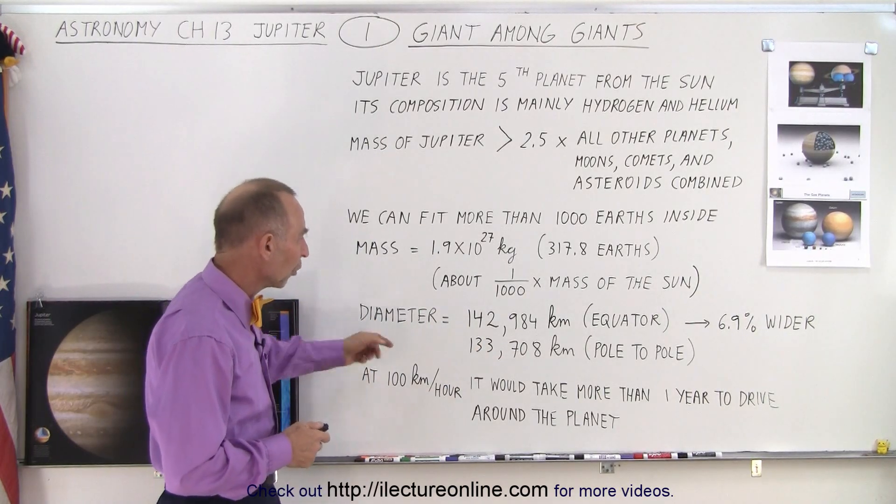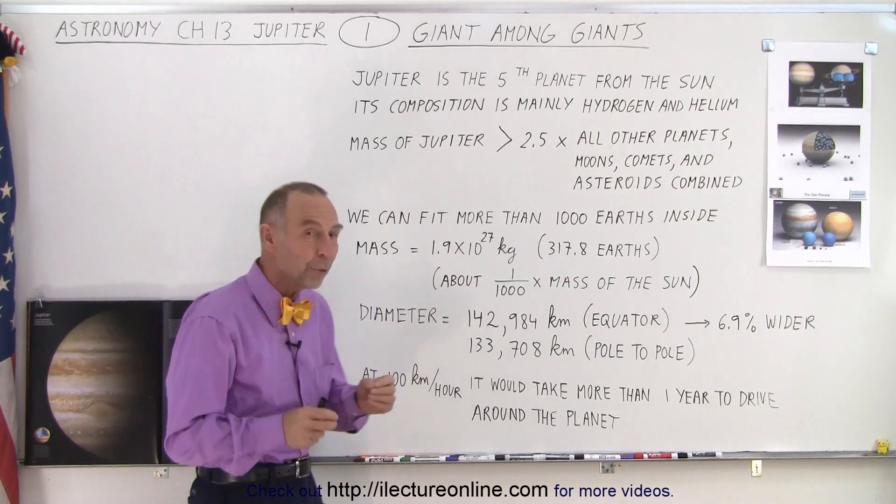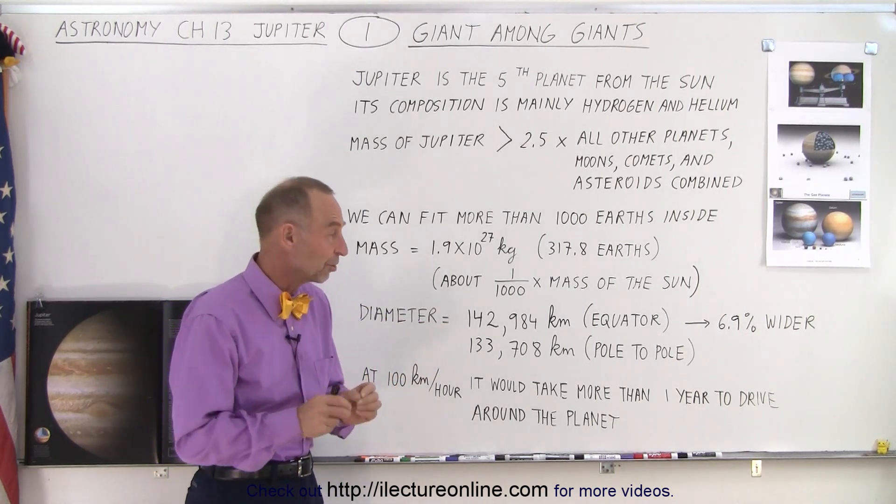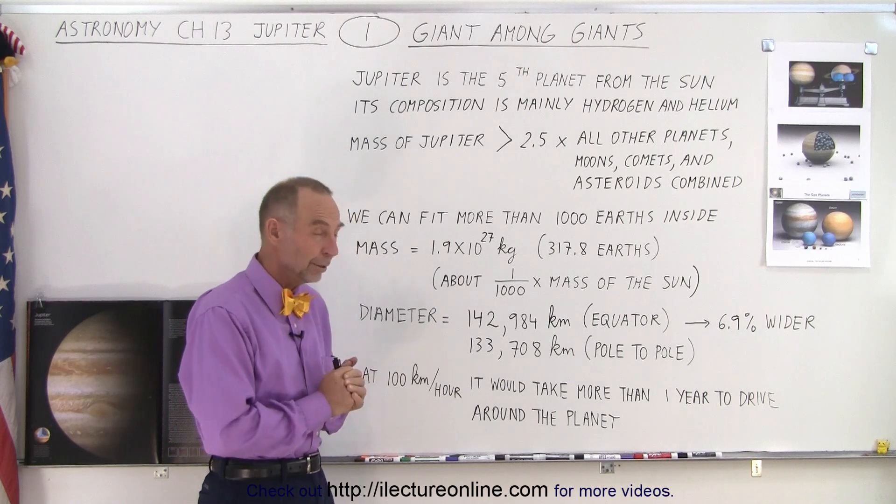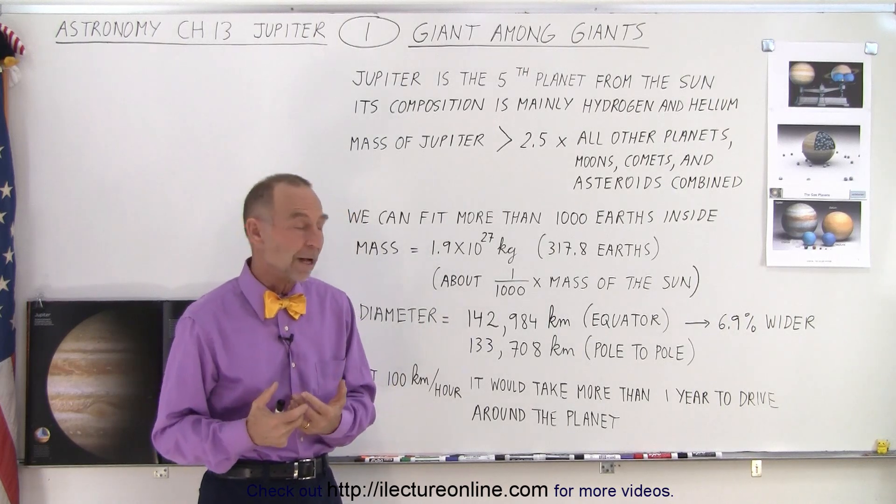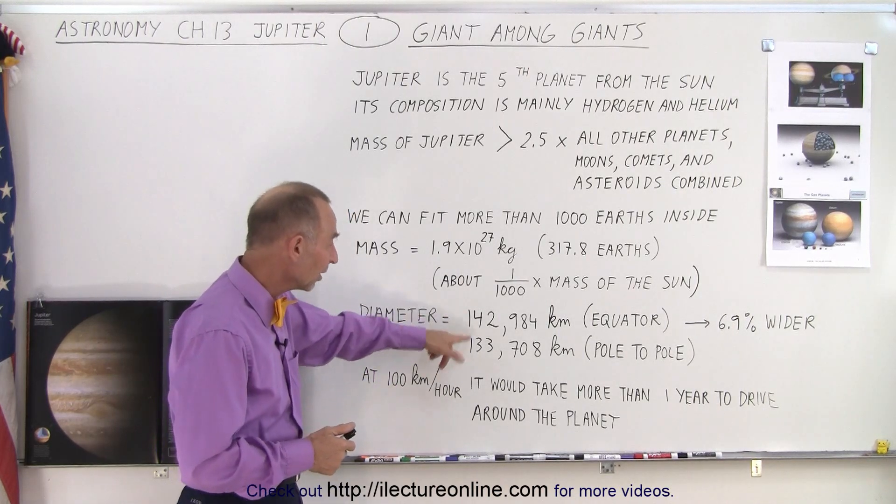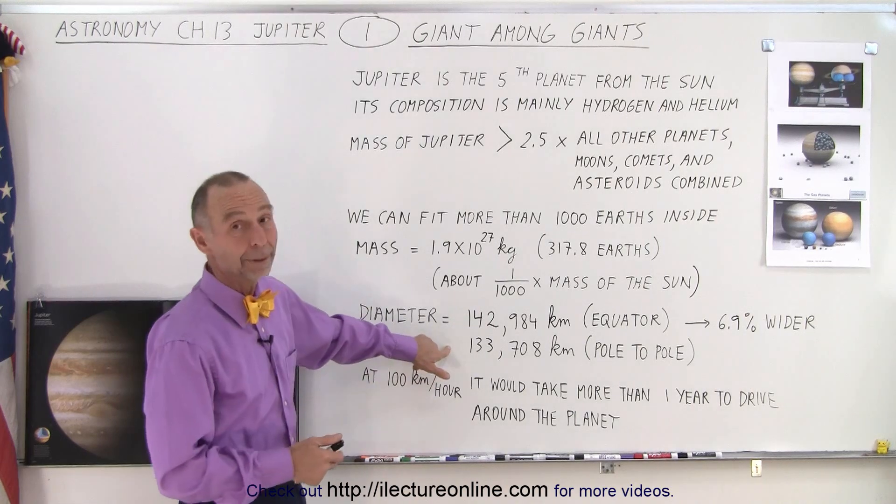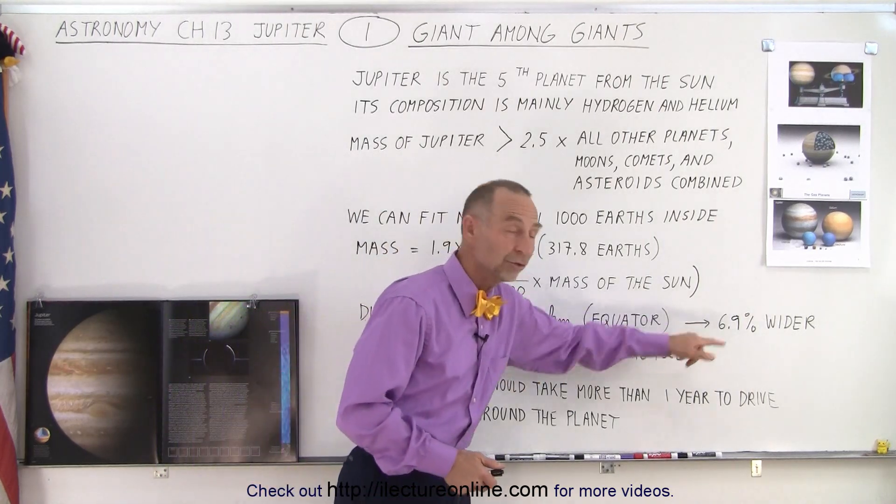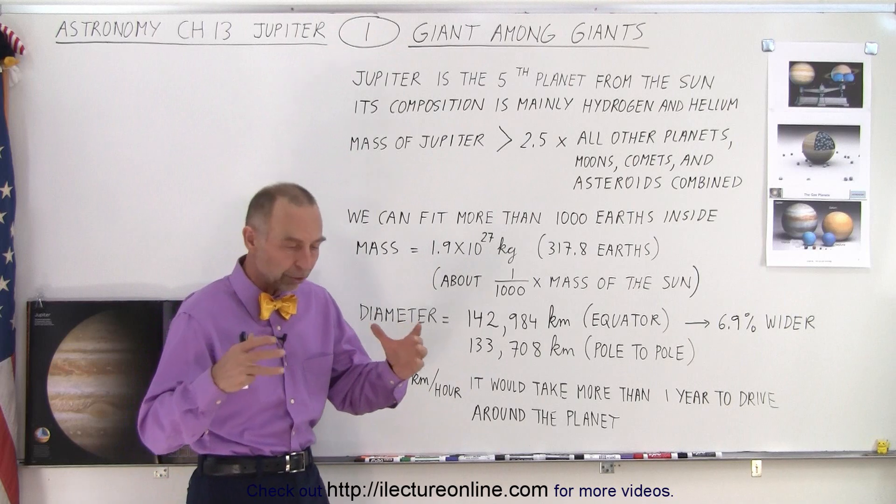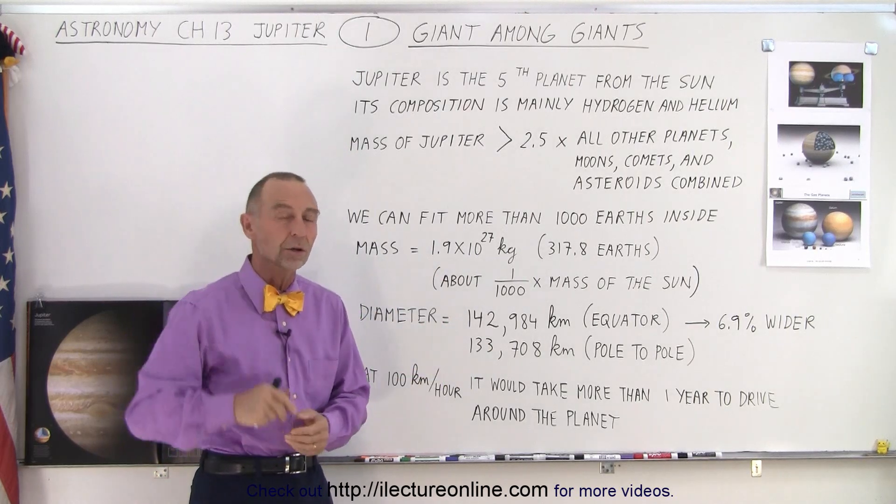The diameter is also astonishing. Almost 143,000 kilometers in diameter at the equator, which is almost 90,000 miles. And at the pole, it's a little bit less. Well, actually quite a bit less. Notice the difference is almost 7%. Jupiter is almost 7% wider than it is tall.